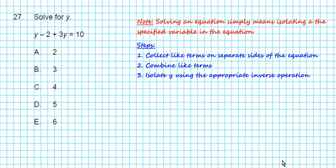Let's take a look at problem 27. In this equation, we're asked to solve for Y. We have Y minus 2 plus 3Y equals 10, similar to one of the steps we did in the previous problem. When they ask you to solve it, you're simply isolating the indicated variable. In this case, we want to isolate Y on one side of the equation. Steps are as follows: collect like terms, combine like terms, and then isolate Y.